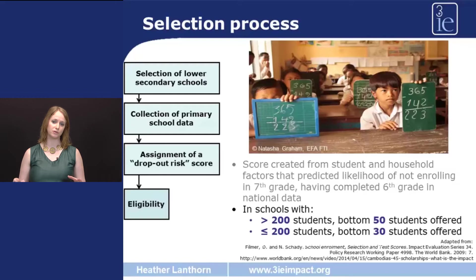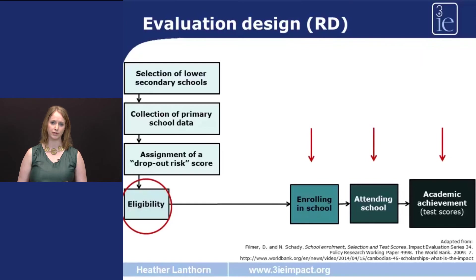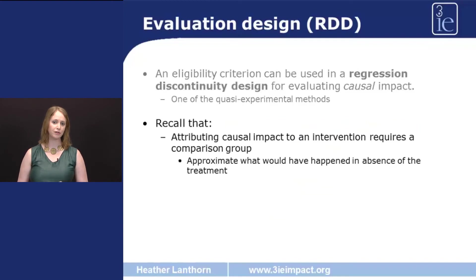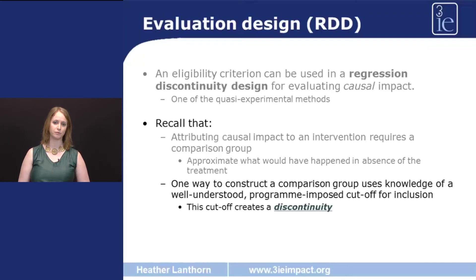Once they assessed the dropout risk score, they chose the lower 30 or lower 50 students, depending on the size of the school, in order to offer the scholarship to. Now let's see how they use that eligibility criterion to estimate the causal impact of this program on enrollment, attendance, and test scores. Remember that a regression discontinuity design is one of the ways of estimating causal impact, and it's a particular way of setting up the comparison group. Causal impact questions require us to ask what would have happened in the absence of the program, so we can attribute the true effect. One way to construct the comparison group is to use the cutoff from an eligibility criterion to separate treatment from comparison group — the cutoff creates a discontinuity that is very useful.